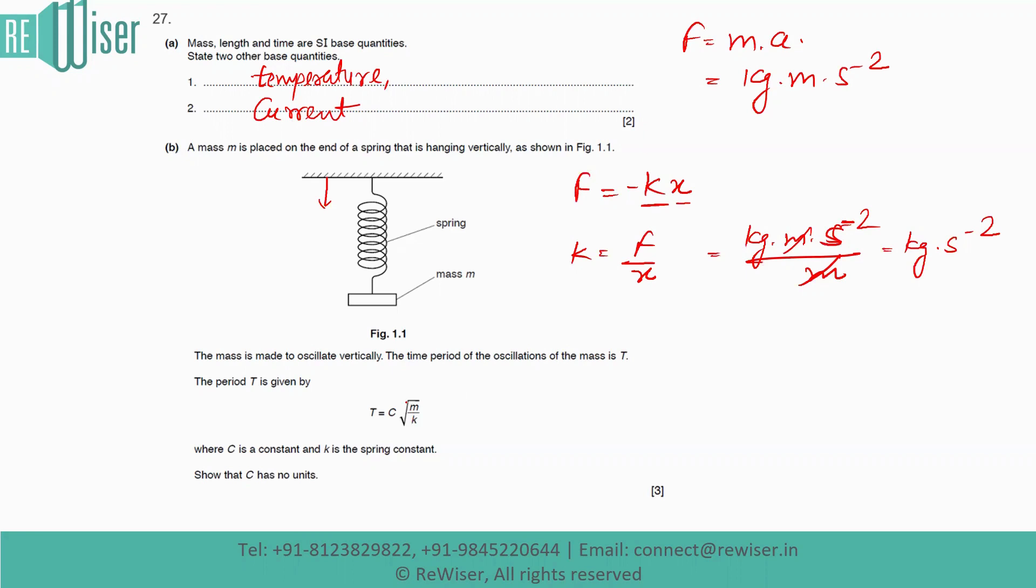For M is the mass, so it will have units of kilogram. So for C we can write, because C is a constant and K is the spring constant, show that C has no units. So for C we will have T divided by √(M/K).